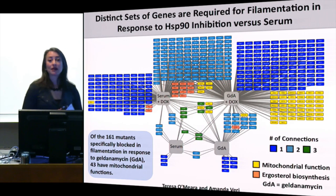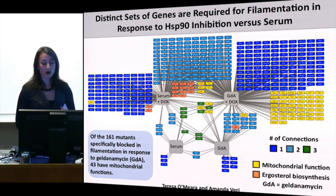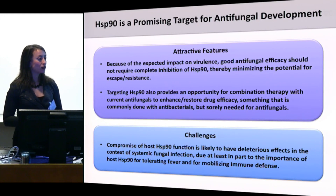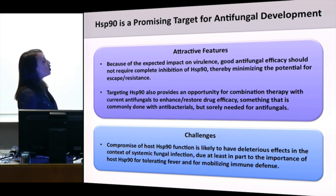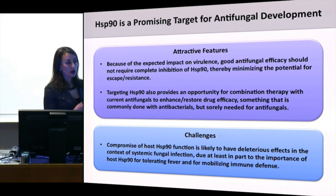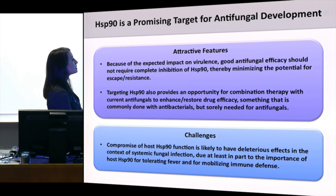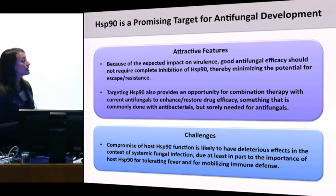Hsp90 regulates drug resistance in diverse fungi and virulence traits in many fungal species — we think it's a very promising target for antifungal drug development. Because of the expected impact on virulence, good antifungal efficacy in a host context may not require complete inhibition of the target protein. Targeting Hsp90 also provides an opportunity for combination therapy with current antifungals to enhance and restore efficacy against resistant pathogens, something commonly done with antibacterials but very sorely needed for antifungals.